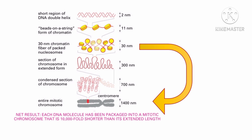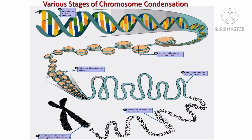This packaging of chromatin at higher levels requires an additional set of proteins that collectively are referred to as non-histone chromosomal proteins. This organization of DNA into chromatin fiber and chromosomes is very complex, and the net result is that each DNA molecule is packaged into a mitotic chromosome that is around about 10,000-fold shorter than its extended original length.